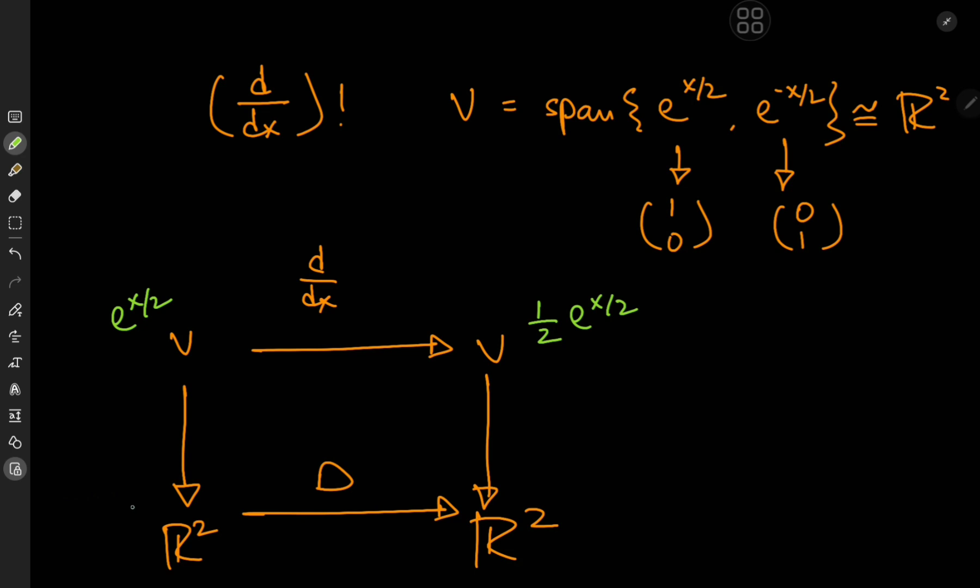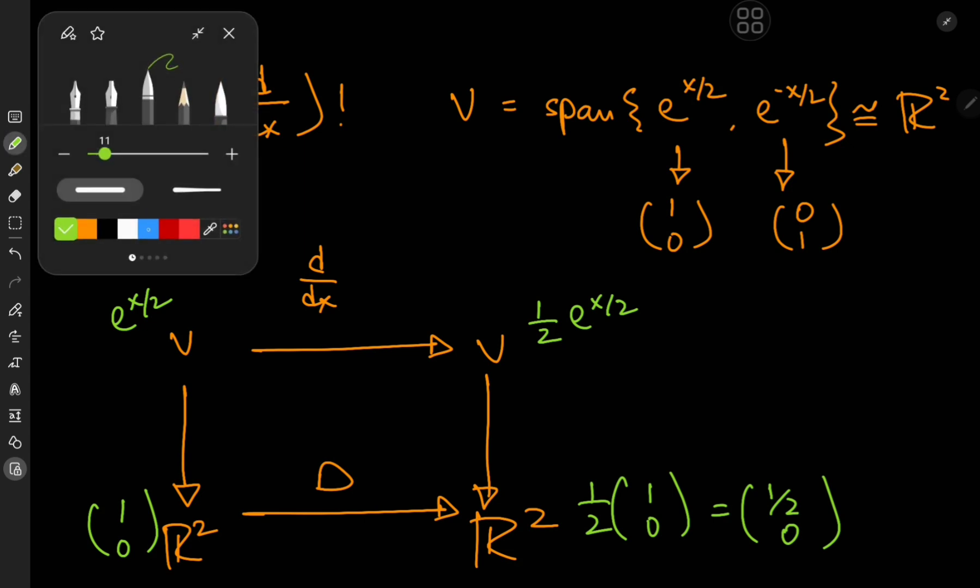What does this look like in the R2 space? E to the x by 2 is 1, 0, whereas 1 half of e to the x by 2 is 1 half of the basis vector 1, 0, which is of course 1 half and 0. That's what happens to one of the basis vectors.